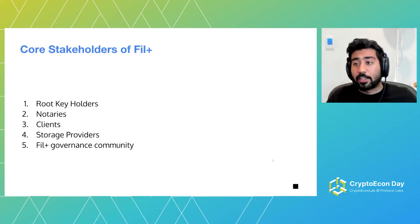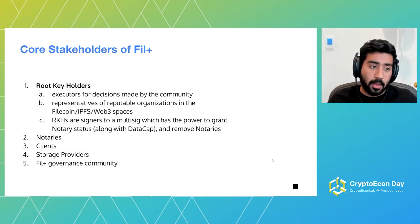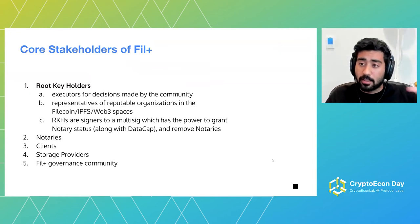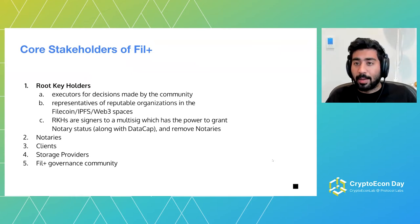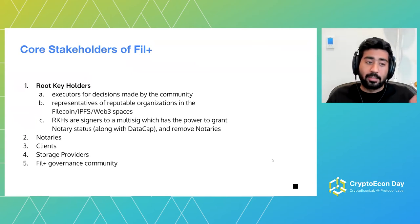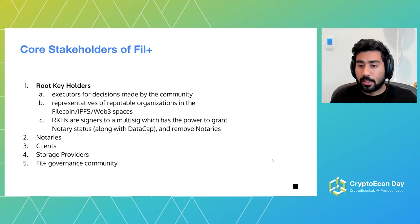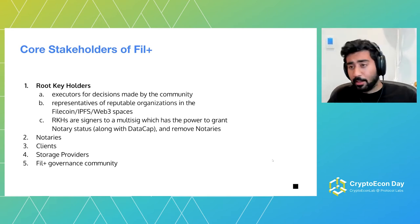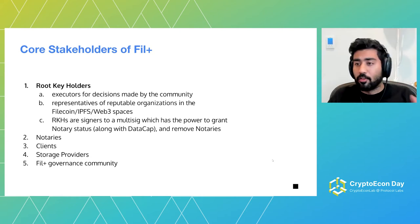So how do these stakeholders come together for the Filecoin Plus system to work? First, root key holders are our executors of decisions on chain. These decisions are often made via community governance through conversation, consensus, and voting, but to actually execute decisions on chain — for example, when a new notary is elected — root key holders can objectively push a decision onto the chain based on the audit trail of that decision.